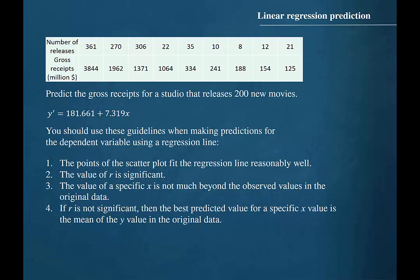The fourth guideline is that if r is not significant, then the best predicted value for a specific x value is the mean of the y value in the original data. In this case, we found r to be significant, so we will use the linear regression equation to make our prediction.